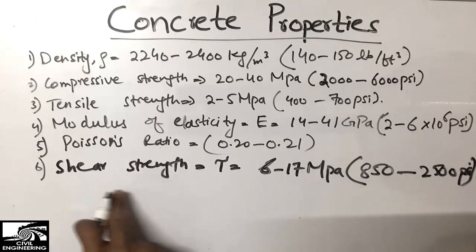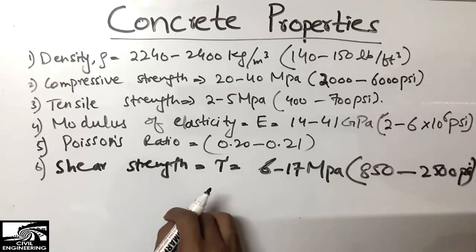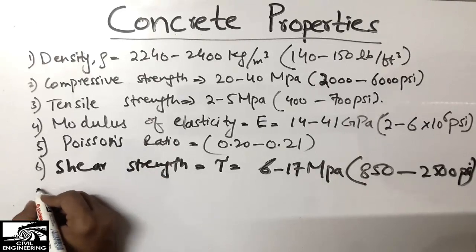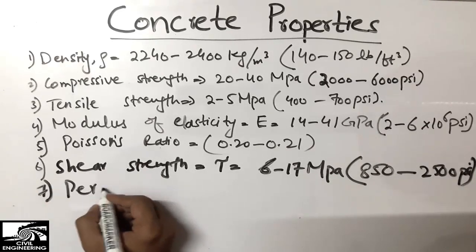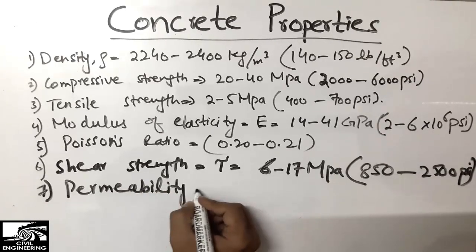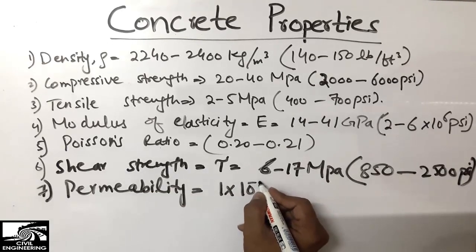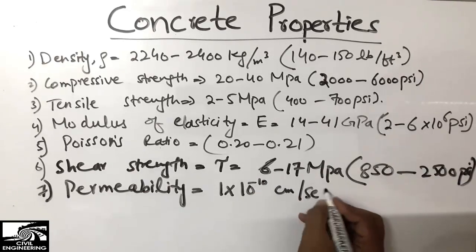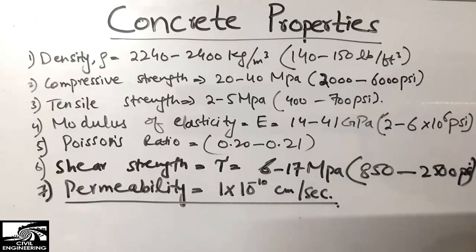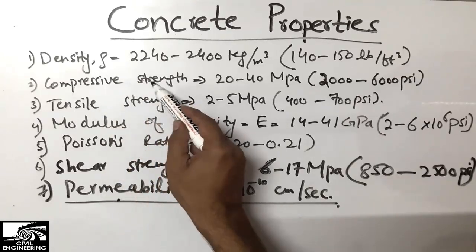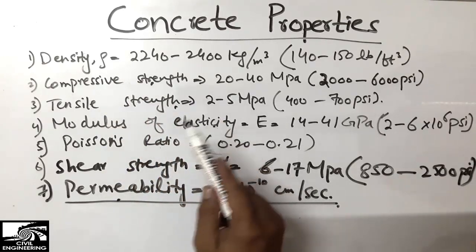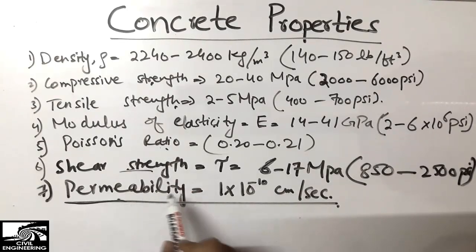The last concrete property is the permeability of concrete. Concrete permeability is really very low — it is 1 into 10 to the power minus 10 centimeter per second. So every civil engineer should remember these seven properties: density, compressive strength, tensile strength, modulus of elasticity, Poisson's ratio, shear strength, and permeability of concrete.